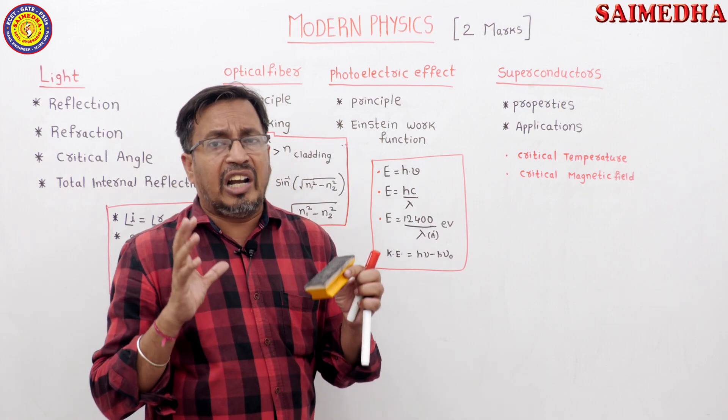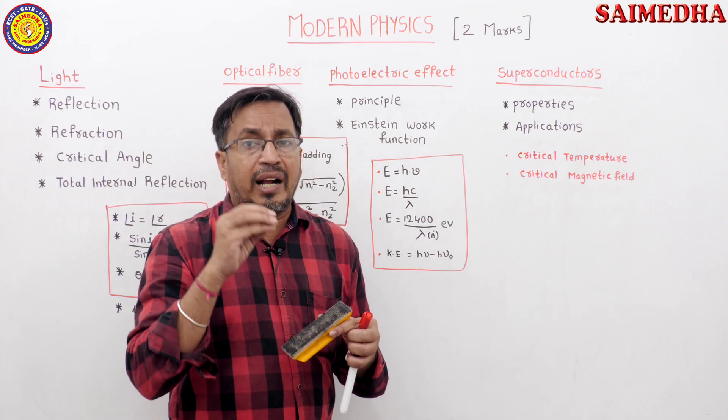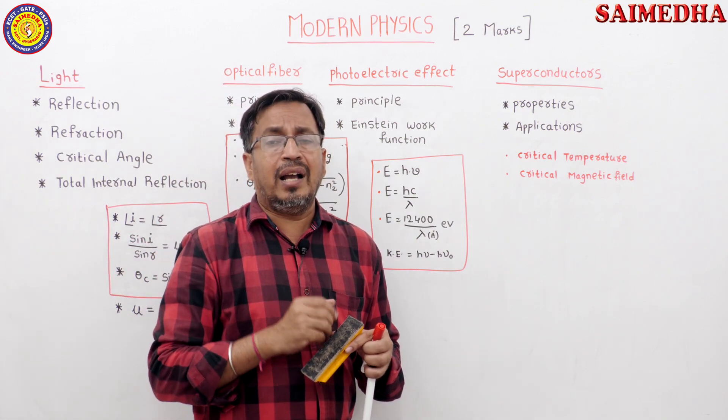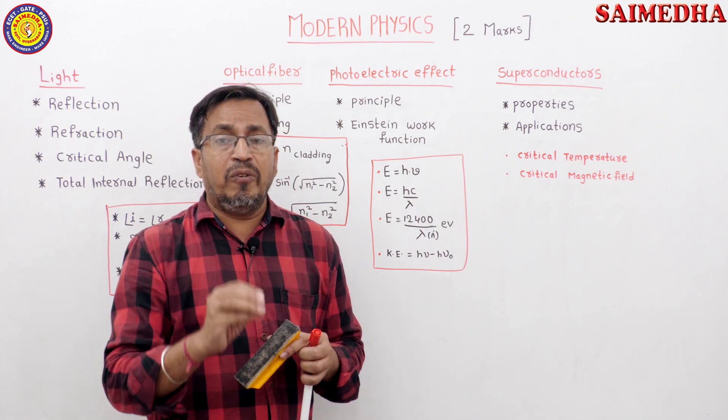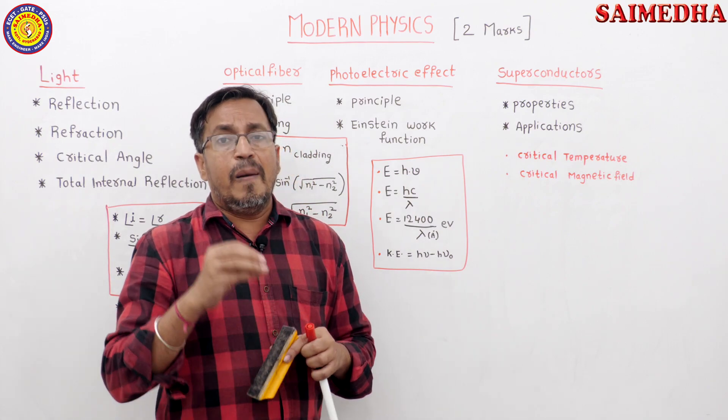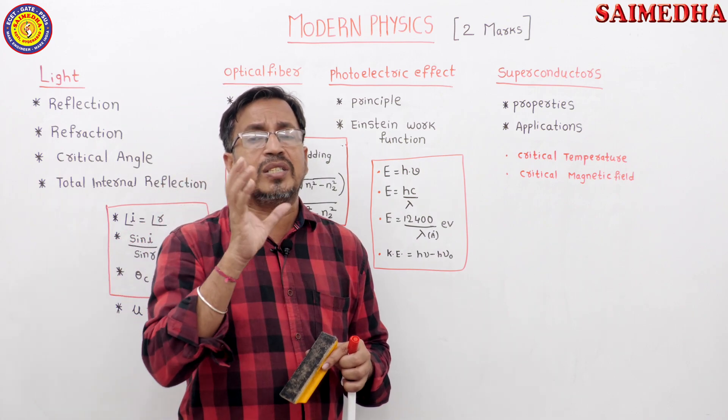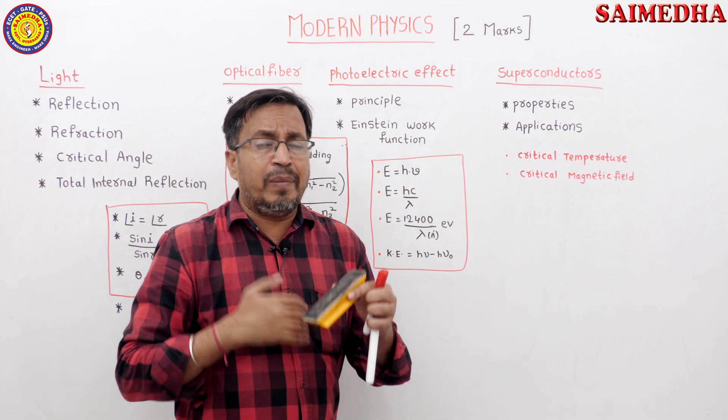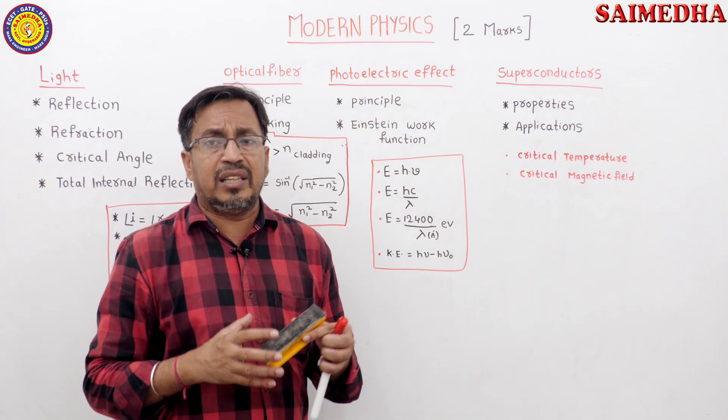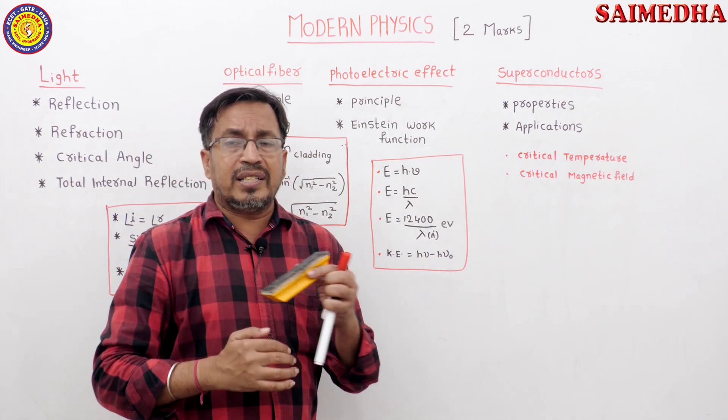There are many problems in this. Wavelength represents in angstroms. Energy units are joules. The third formula uses energy units in electron volts. We can answer many problems with these units. Energy is in joules or electron volts. Wavelength is in meters or angstroms.